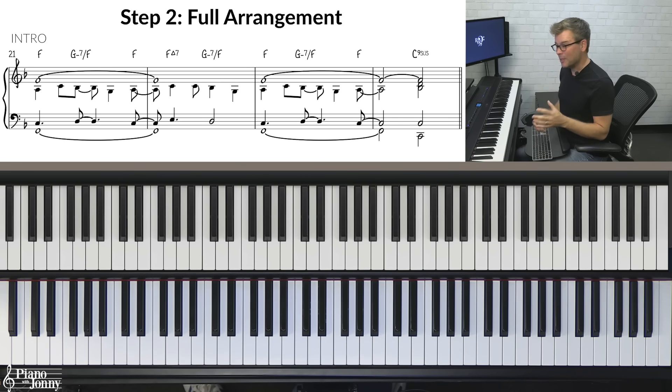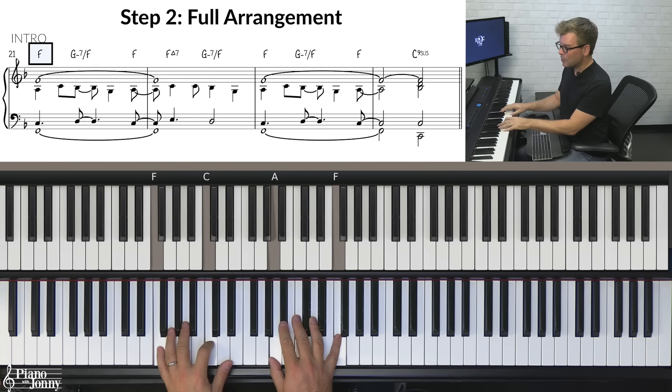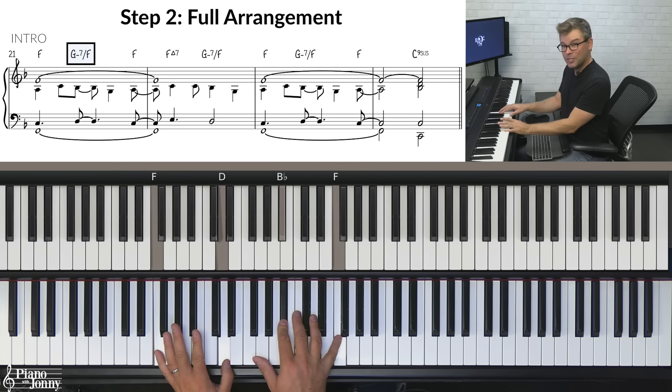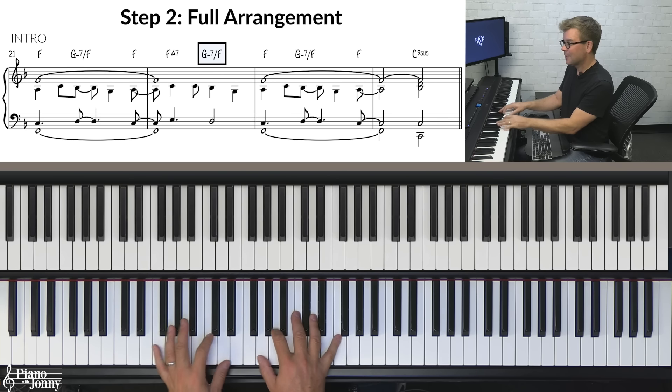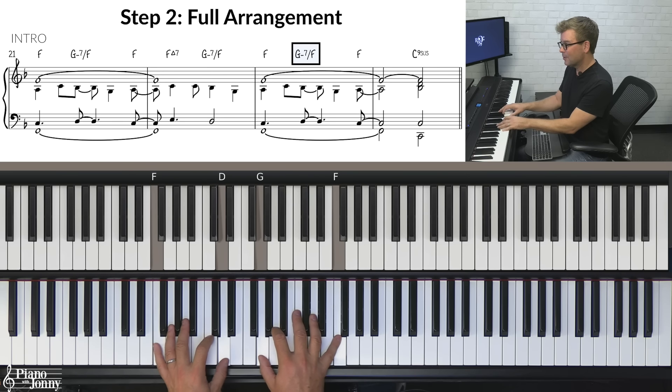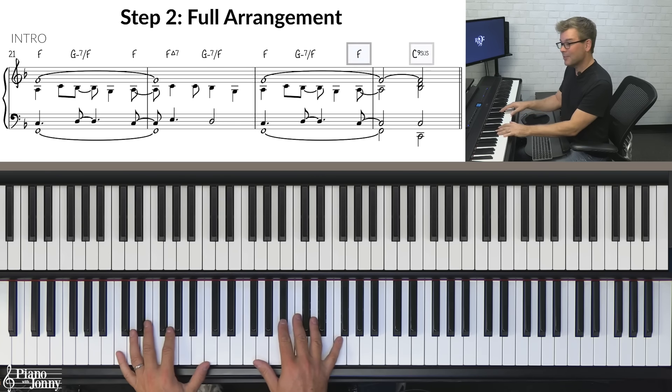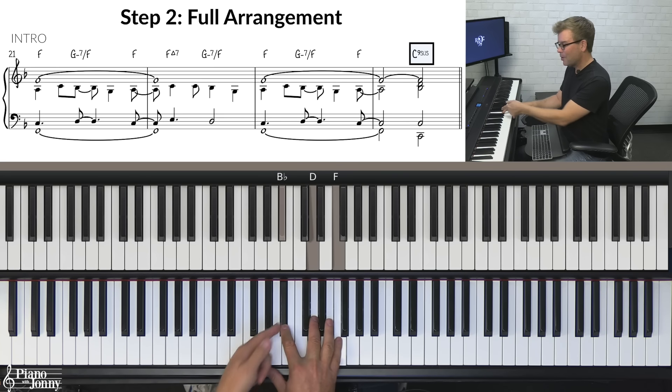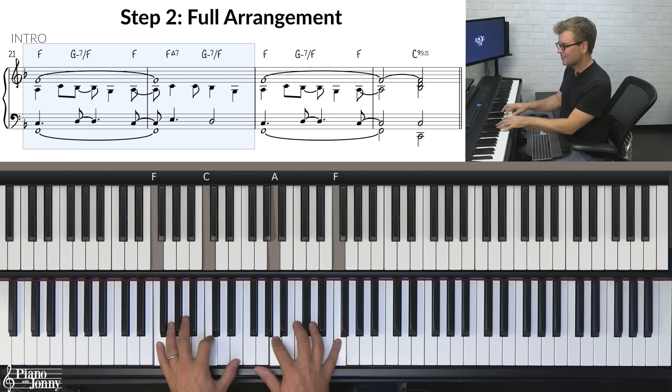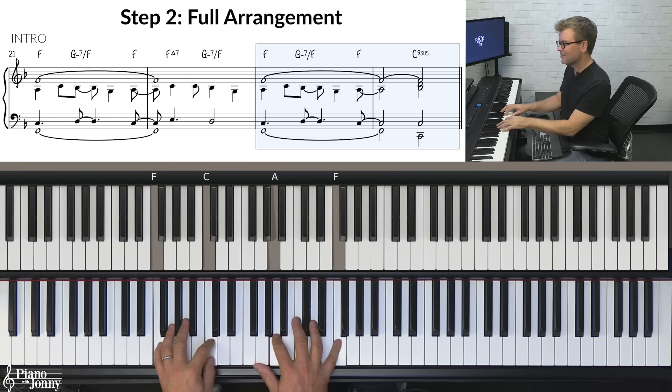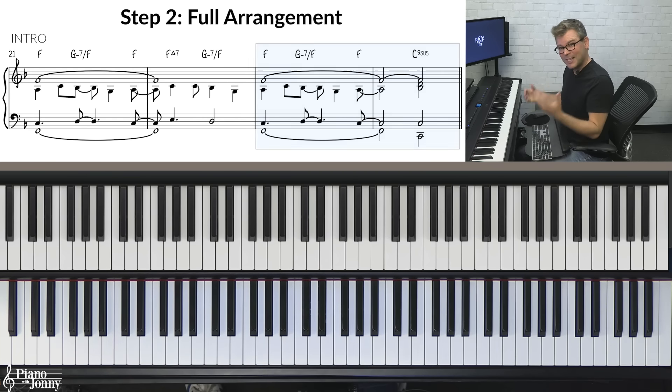Step number two is the full arrangement. And when we're putting together a full arrangement, we need to have an introduction and an ending. So a really typical intro is to start on the one chord. And there's this great device where you go from the one chord to like a two over one or G minor over F back to the one chord, up to a major seven back to the two chord. One, minor two, one. But it's all over one. They call that a one pedal. And then to the five chord. In this case, it's a sus chord or a B flat triad over C. So the intro sounds like this. Beautiful, right? And it sets up the feel of that bossa nova groove. And now we're ready to hear the melody.